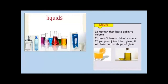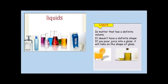When you pour a liquid — for example juice or any other liquid — it takes the shape of the container. A container is an object that holds something, like a glass or a bottle. The liquid takes the shape of the bottle, and here the liquid takes the shape of the glass.